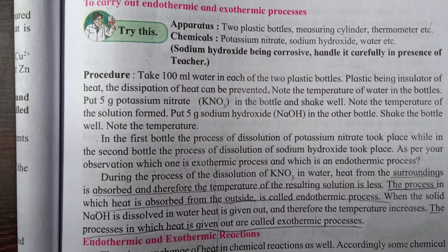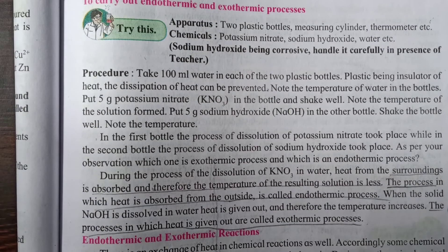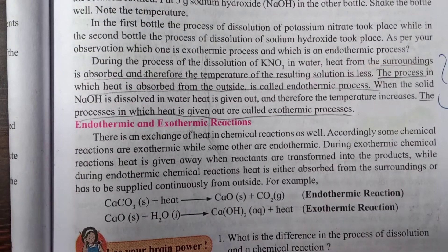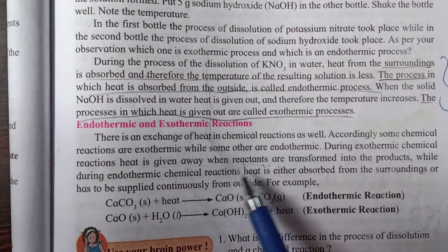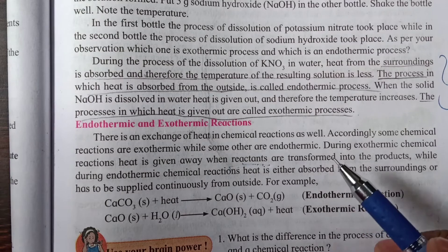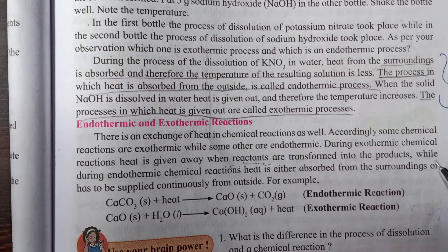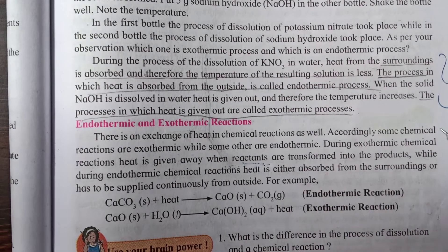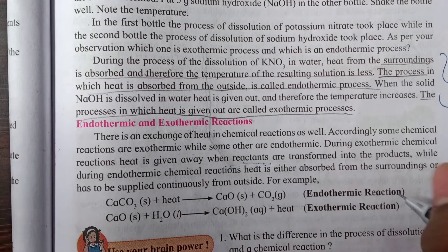Now we will look at endothermic and exothermic reactions. There is an exchange of heat in chemical reactions as well, and accordingly some chemical reactions are exothermic while some are endothermic. During exothermic chemical reactions, heat is given away from the reactants and they are transformed into products. During endothermic reactions, heat is either absorbed from the surroundings or has to be supplied continuously from outside.